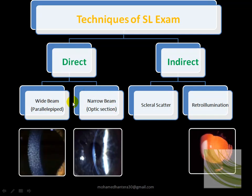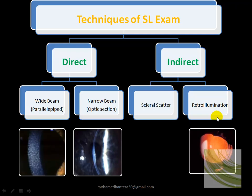Once you find the pathology, you need to evaluate the thickness of the cornea or the depth of the lesion — you make it a narrow beam. If there is an angle of 30, 60, or 90 degrees between the illuminating and viewing arms, this is called indirect illumination, because we use internal structures to see the level of lesions inside the cornea, such as scleral scatter and retro illumination, which we will discuss in the next few slides.